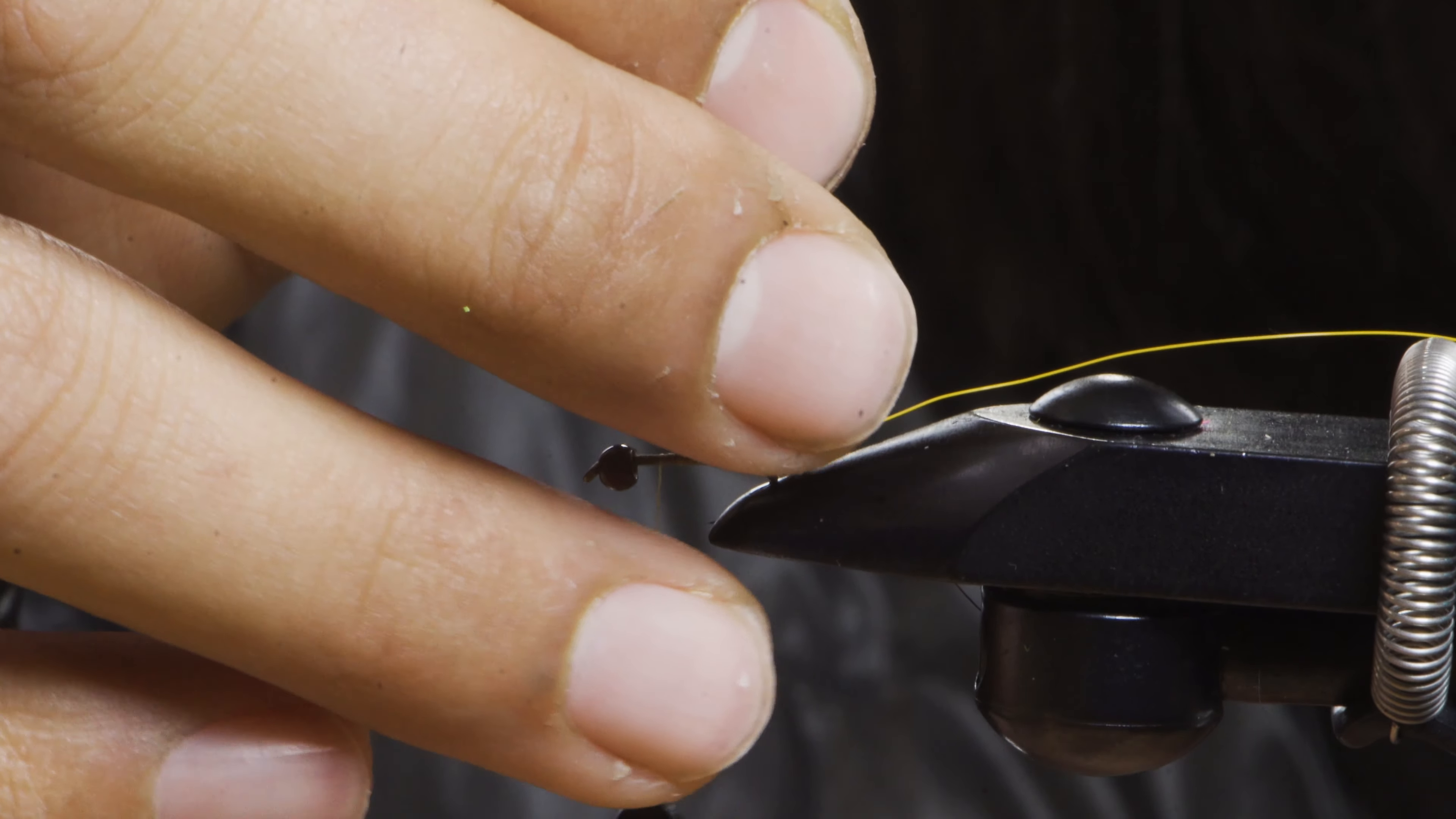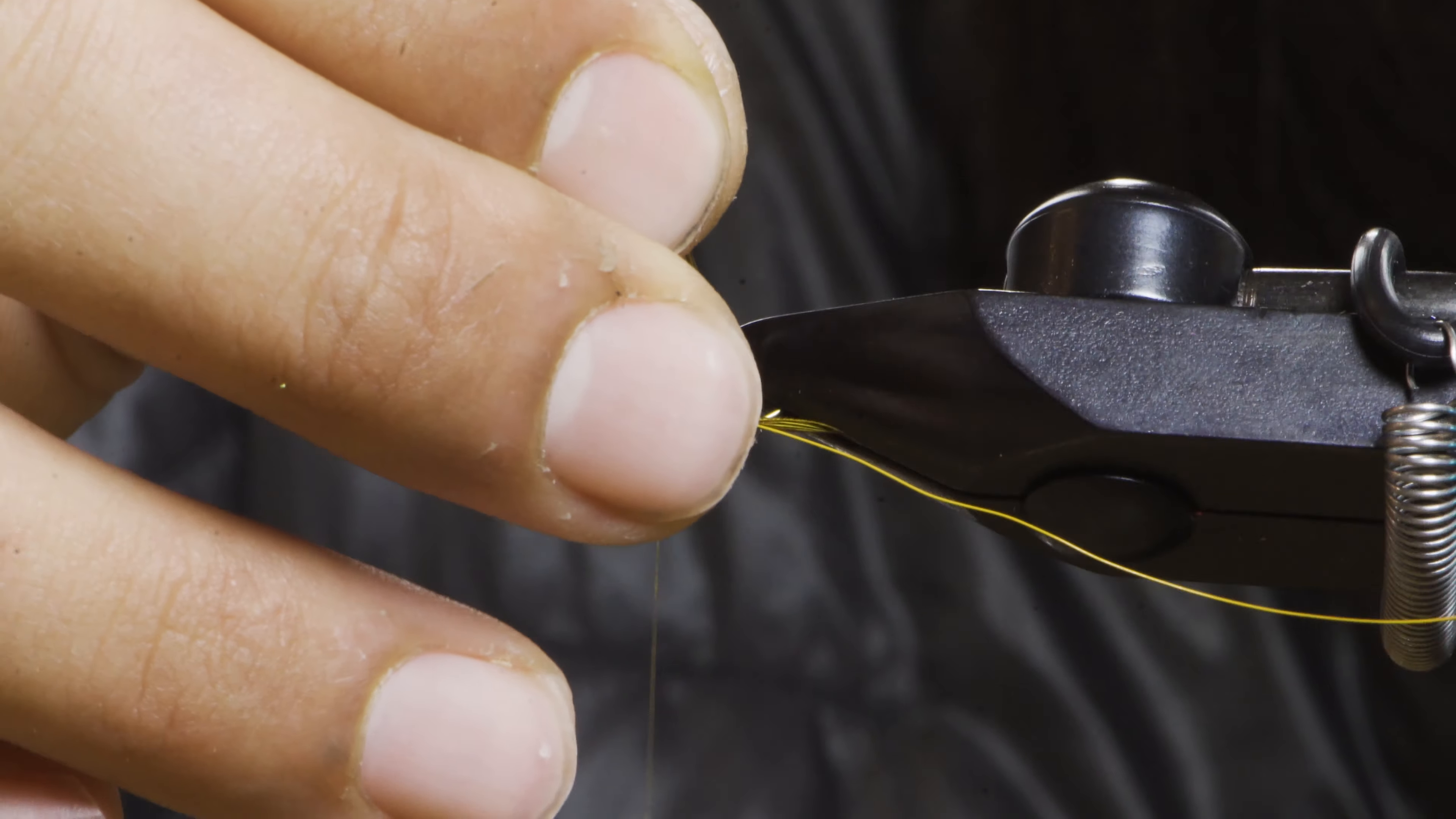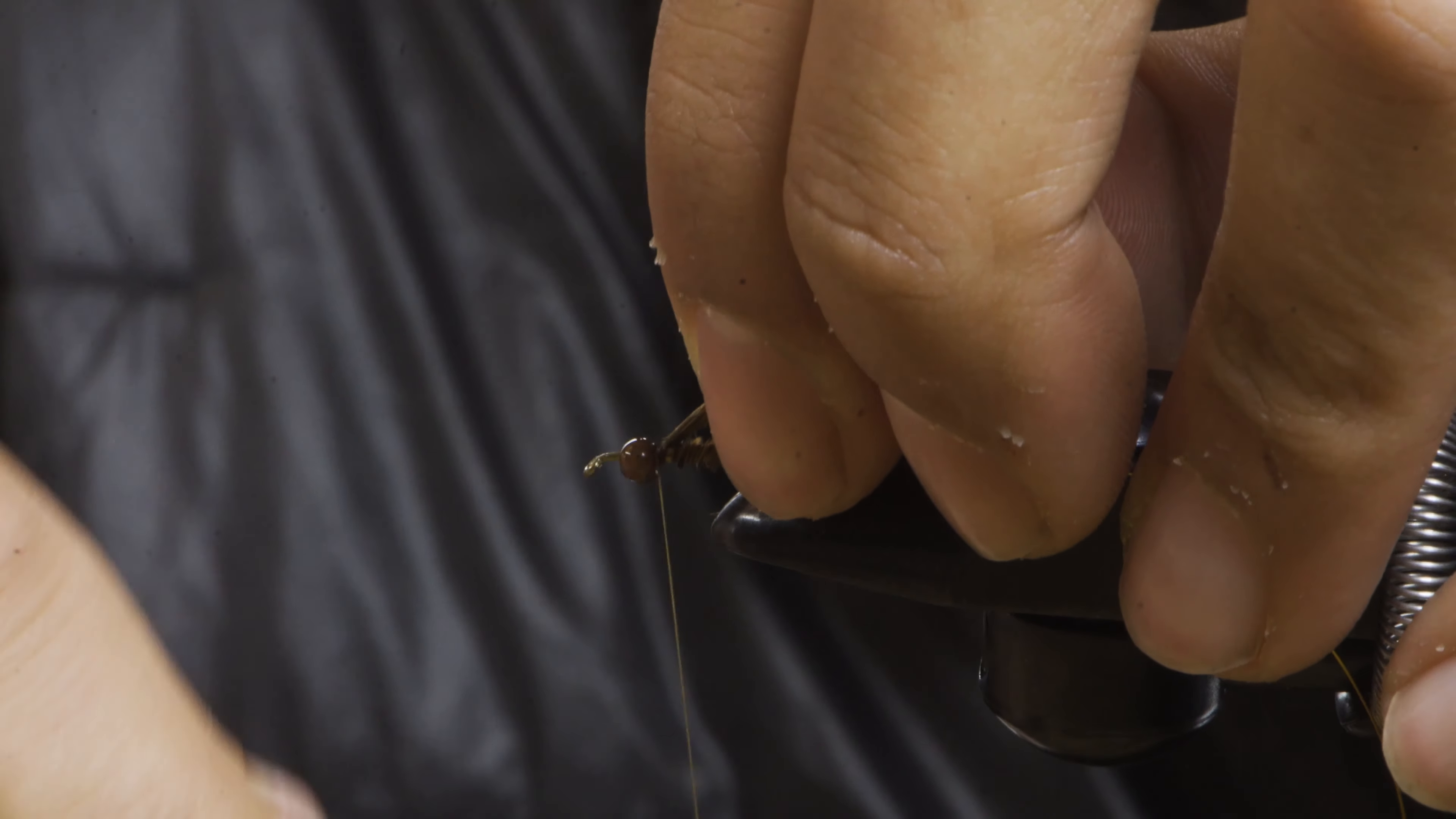I'm going to use the rotary function on my vise. If your vise doesn't have this you can just twist it up. No need to take that all the way up to the bead because that's where the thorax is going to be.